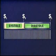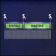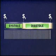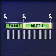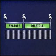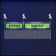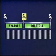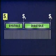Ventricular systole occurs between S1 and S2. Ventricular diastole occurs between S2 and the next S1. Because diastole usually lasts longer than systole, you can identify the two sounds: one two, one two.